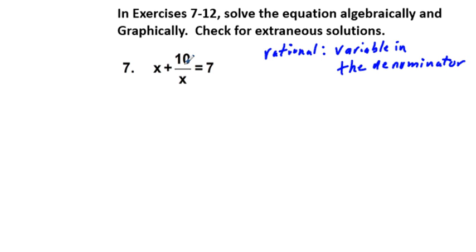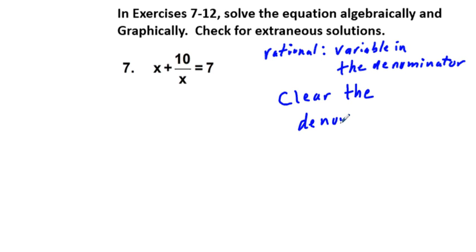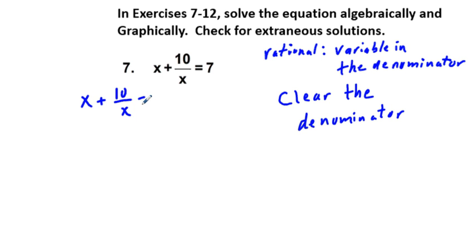So let's look at this. The strategy we're going to be using on these problems — we have this x sitting down here below the 10 — is to clear out the denominator. We have the equation x plus 10 over x equals 7.